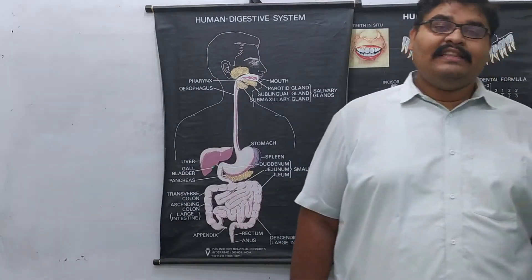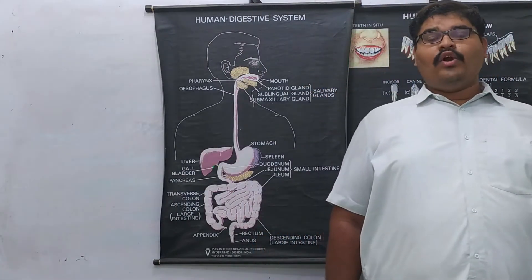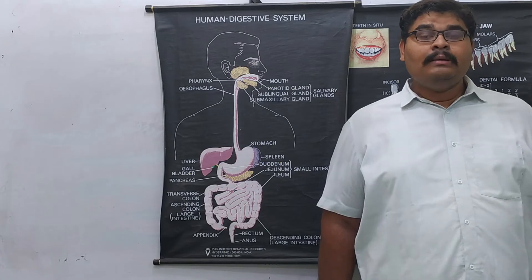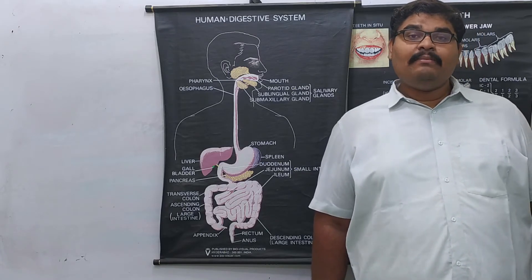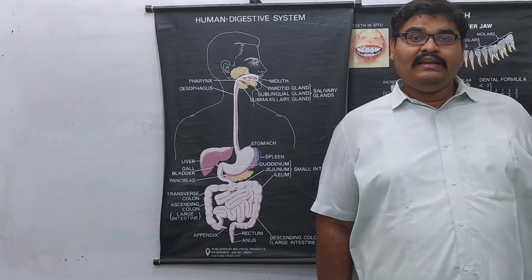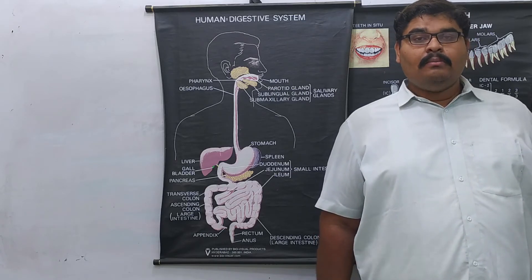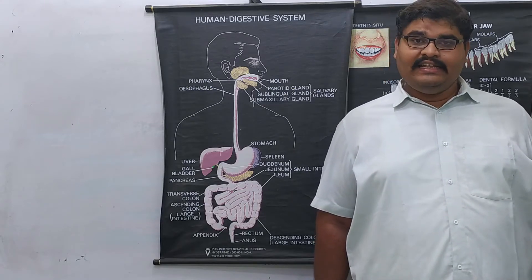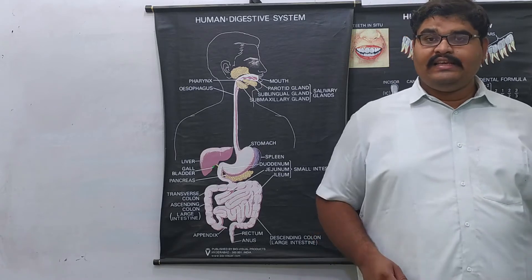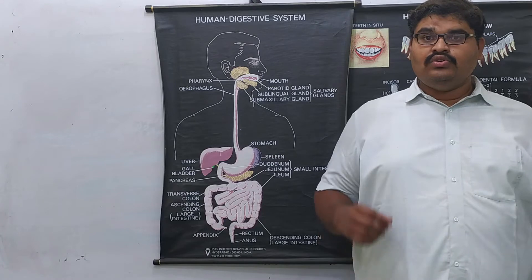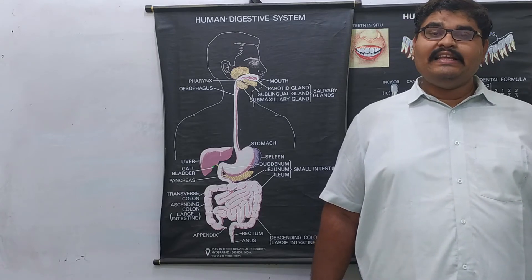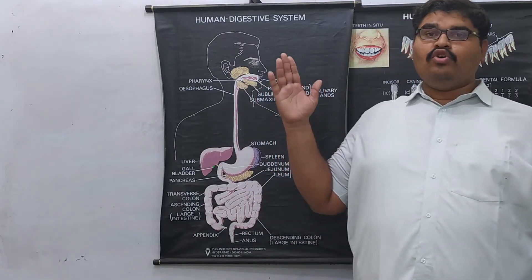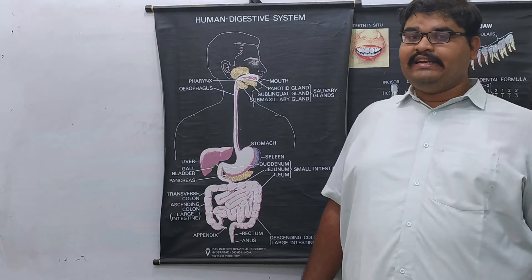Mechanical digestion is also called physical digestion, where food is physically ground to simpler or easily usable forms. In the human digestive system, both mechanical and chemical digestion take place. Mechanical digestion takes place by the teeth in the mouth through the grinding process — called mastication — and in the stomach through churning movements.